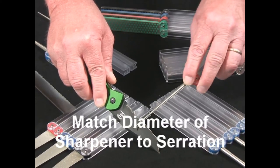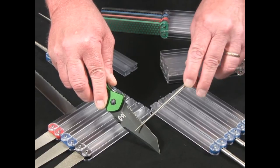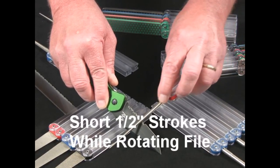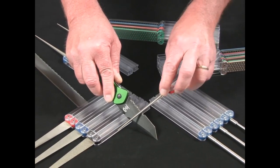Start with matching the diameter of the sharpener to the diameter of the gullet on the knife, and using short back-and-forth strokes while you're twisting. It will easily and quickly restore those serrated edges.